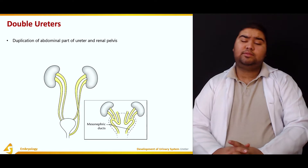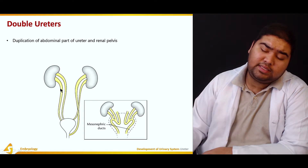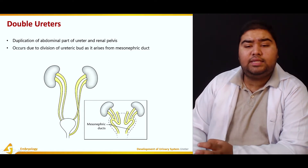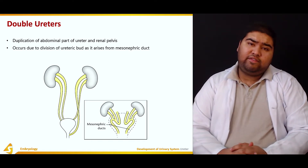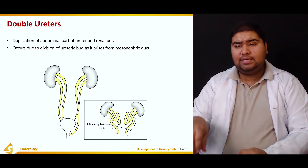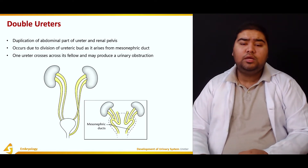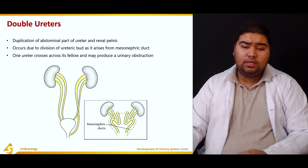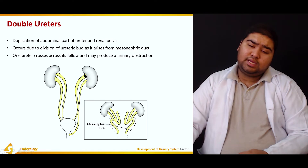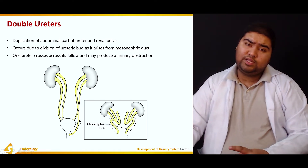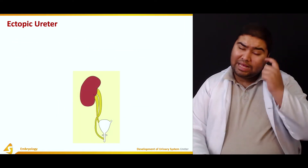In double ureters, duplication of the abdominal part of the ureter and the renal pelvis takes place. This occurs due to division of the ureteric bud as it arises from the mesonephric duct — as soon as it arises, it undergoes duplication. One ureter crosses its fellow and may cause ureteric obstruction, as can be seen in the figure where one ureter covers the other, producing obstructive symptoms.